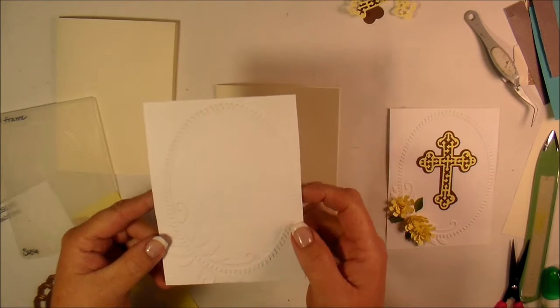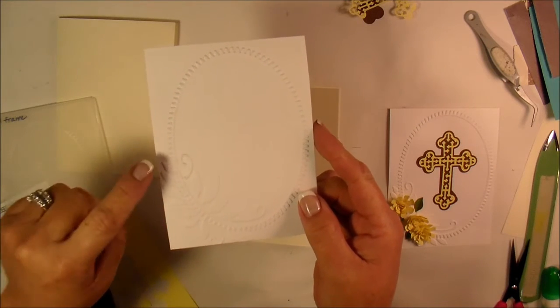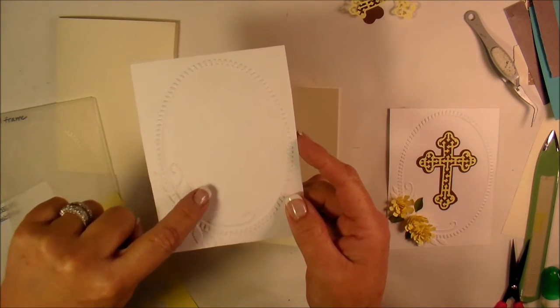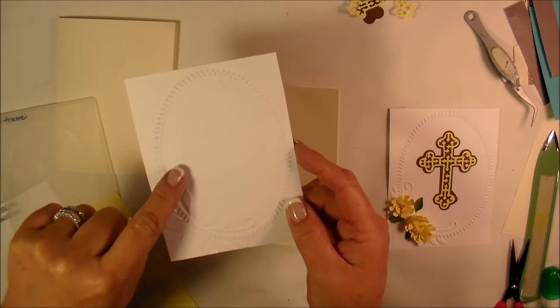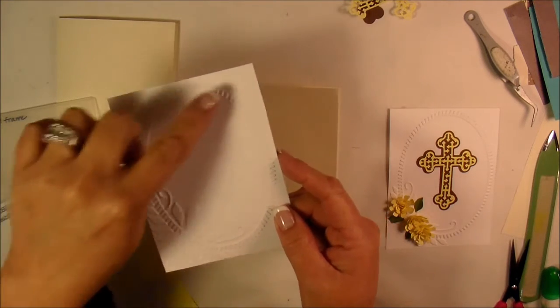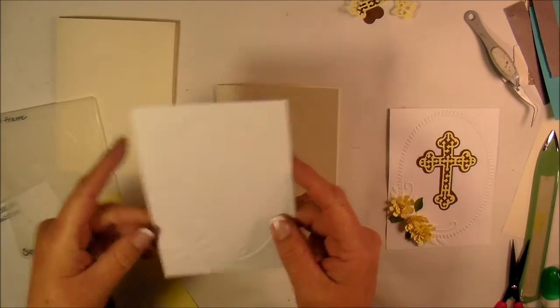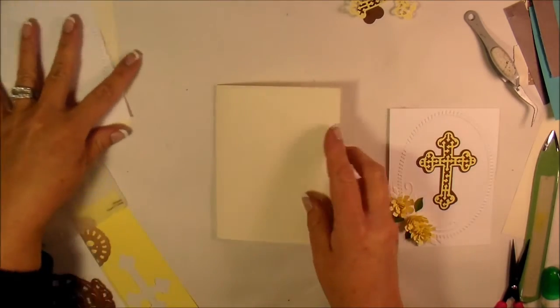I'm going to hold this up a little bit closer. Maybe you guys can see it better. It has these special leaf type design here and then the oval frame. So I'm going to be putting the cross in between or in the middle of that.